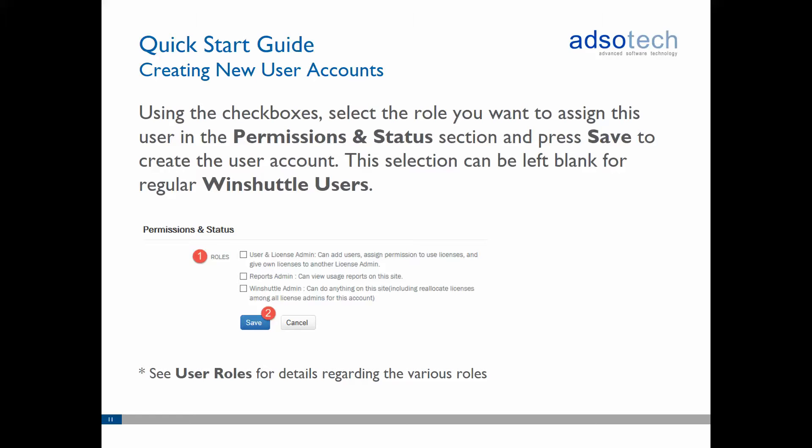Finally, scroll down to the Permissions section to assign a role for this user. Role assignment controls which features the user has access to in Connect. Selecting a role is optional and does not affect which features the user has available in the desktop applications. We will have an in-depth look at the roles later in the training. For now, press Save to finalize the user account creation.